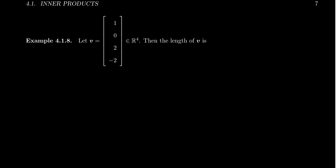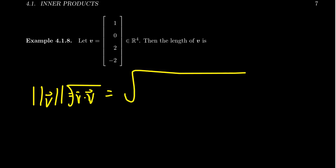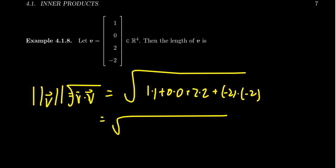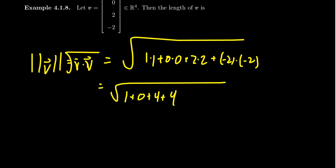Let's do an example in R⁴. If you have the vector (1, 0, 2, -2), we calculate its norm by taking the square root of v dot v. You take the product of the elements with itself: 1×1 + 0×0 + 2×2 + (-2)×(-2), which gives you 1 + 0 + 4 + 4 — the sum of squares of the entries inside the square root. That adds up to the square root of 9, so the length of this vector turns out to be 3.